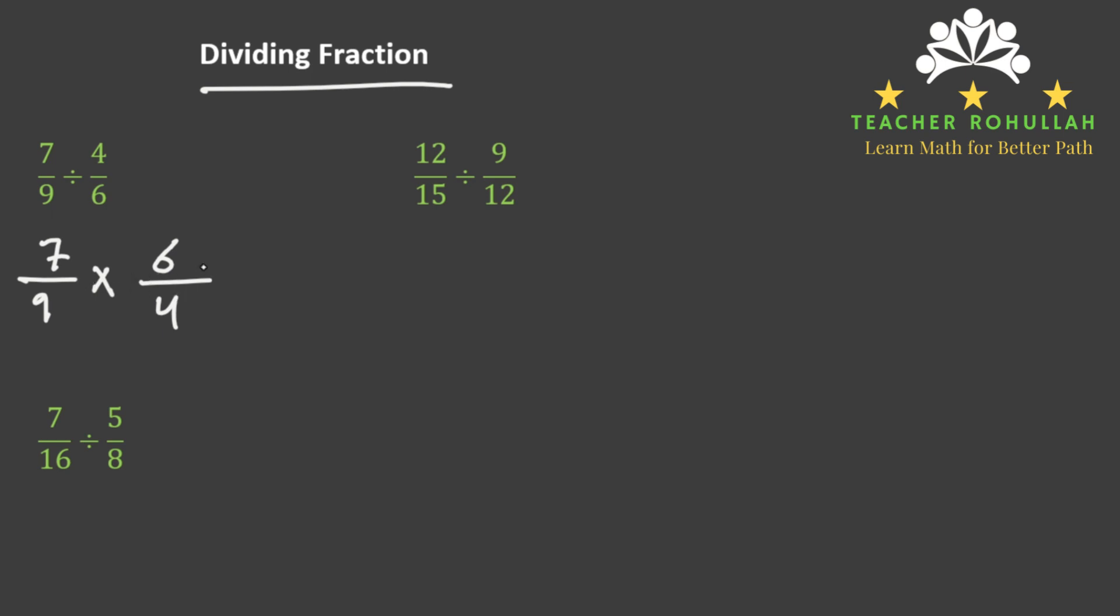Now we can multiply it. 7 times 6 is 42 and 9 times 4 is 36.